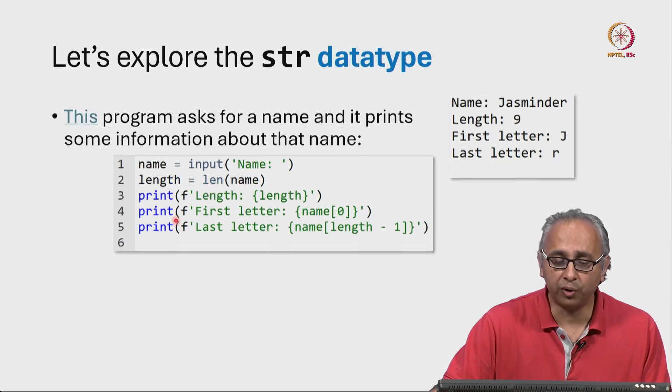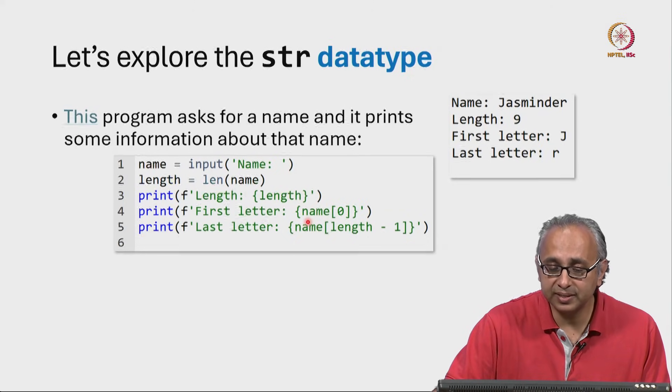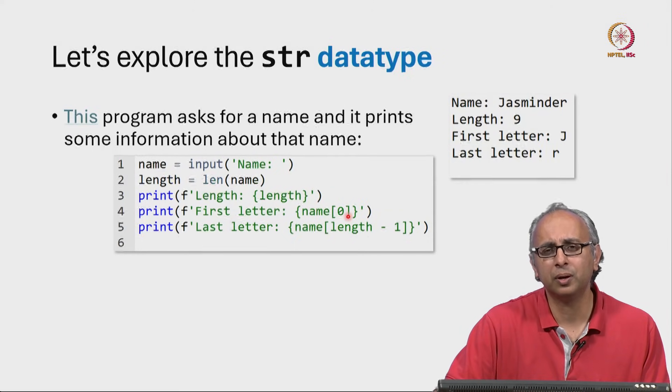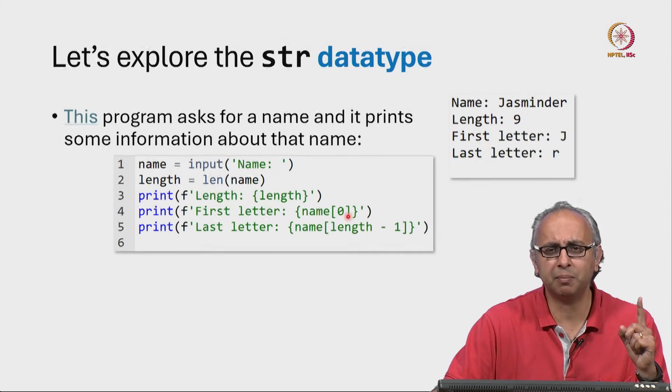Now, on line 4, we print the first letter of name and the syntax is name square bracket 0. Why 0? Shouldn't the first letter be name 1?